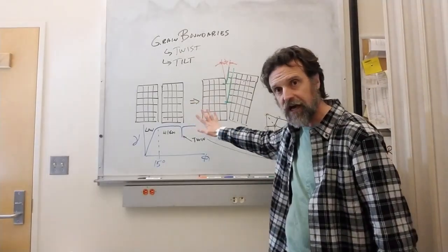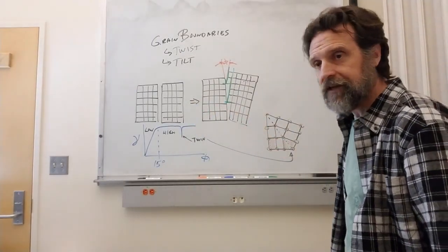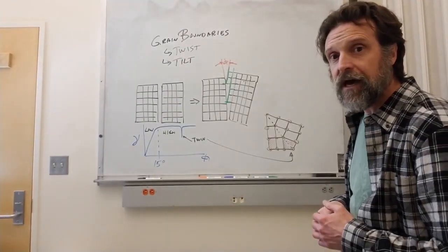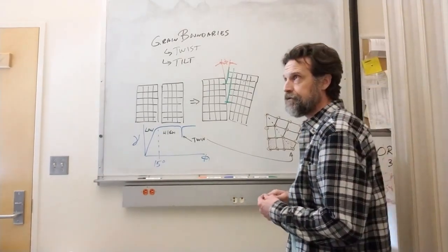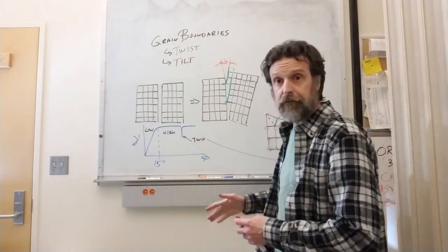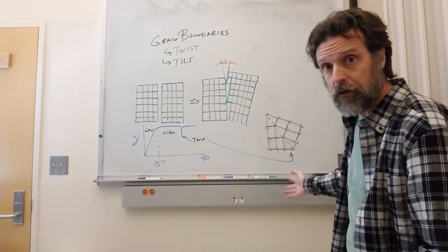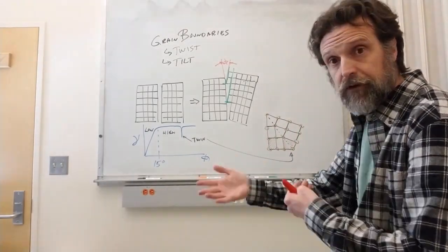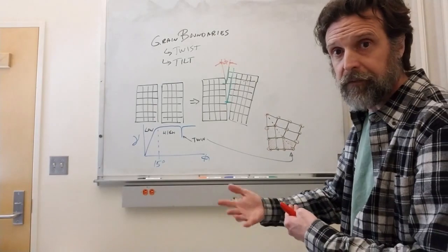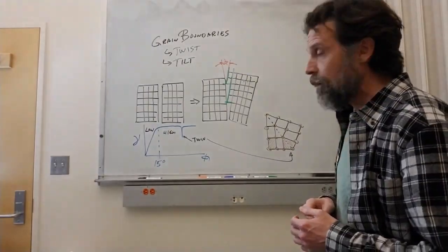Grain boundaries are common, twins are also relatively common. They become extremely important in some fairly special situations. For example, twins are responsible for the behavior of shape memory metals, shape memory alloys.